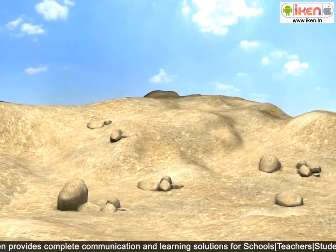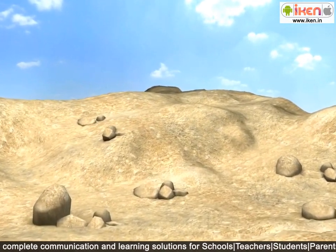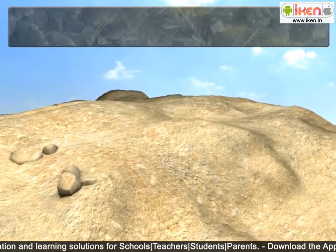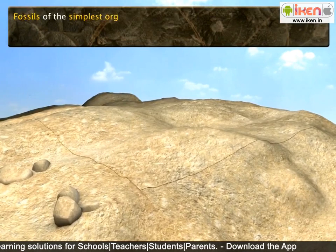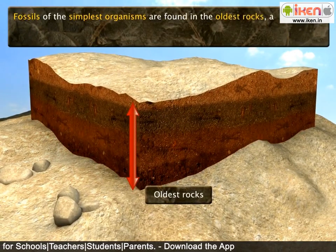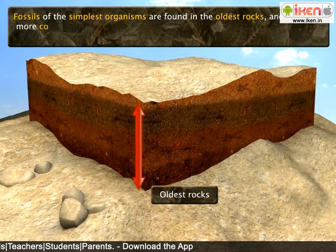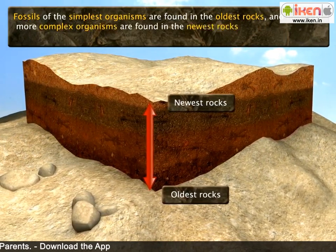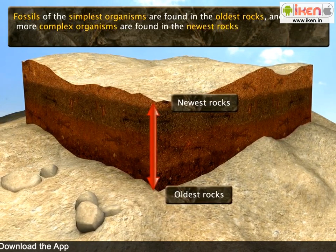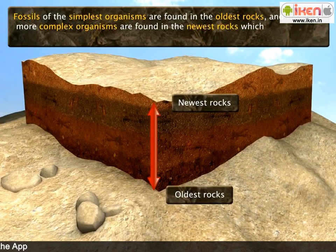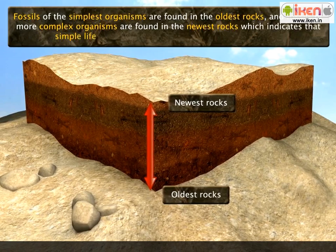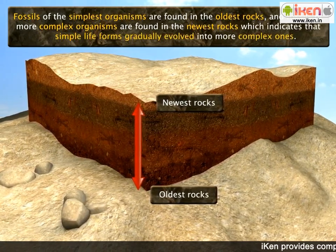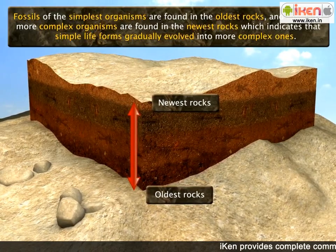Fossils found in rocks of all ages help to study the process of evolution. Fossils of the simplest organisms are found in the oldest rocks, and fossils of more complex organisms are found in the newest rocks. This supports the theory of evolution, which states that simple life forms gradually evolved into more complex ones over a long period of time.